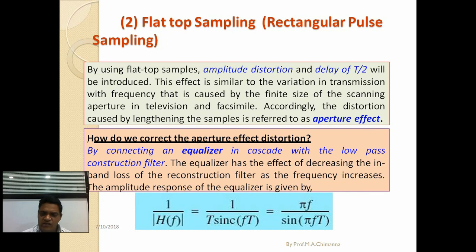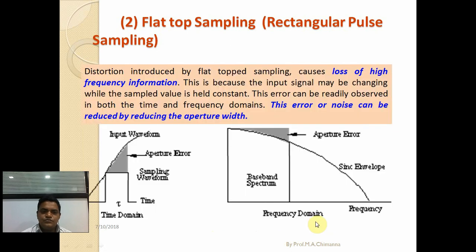To correct the aperture effect, connect an equalizer in cascade with the low-pass reconstruction filter. The equalizer has the effect of decreasing the in-band loss of the reconstruction filter as frequency increases. The amplitude response of the equalizer is 1/H(f) = 1/(τ·sinc(fτ)) = πf / sin(πfτ).